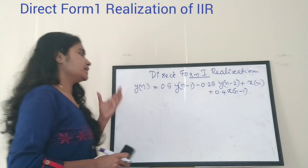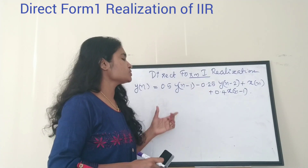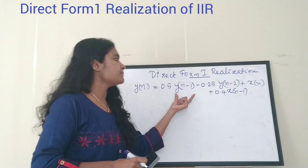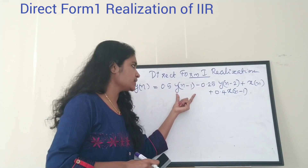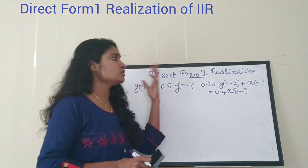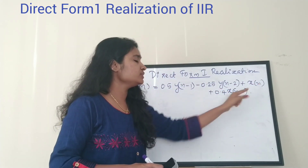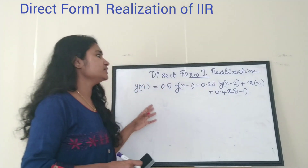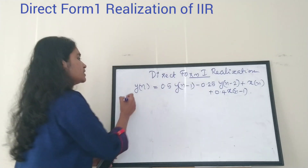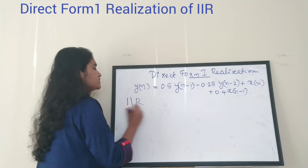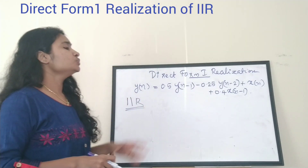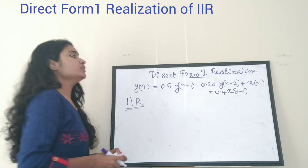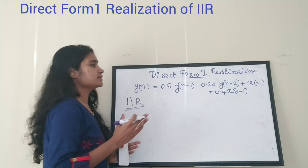If you are given a transfer function like this, you can identify it as the transfer function of an IIR filter because the output y(n) depends on past outputs y(n-1) and y(n-2), and also the present input x(n) and past inputs. Hence it is evident this is a transfer function of an IIR filter, and you have to do direct form 1 realization for it.